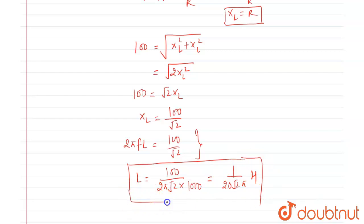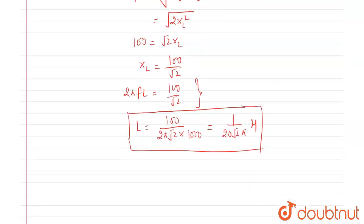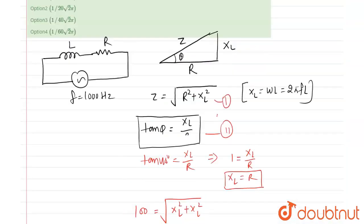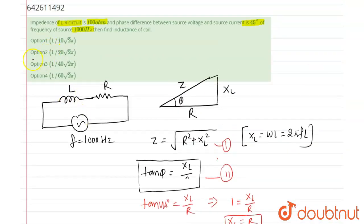So now you can see which option is correct. Option 2 is correct: 1 upon 20 root 2 pi.